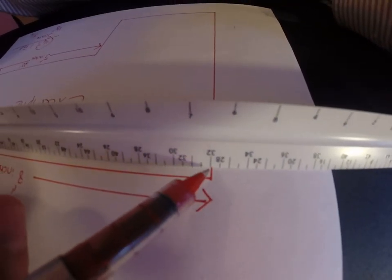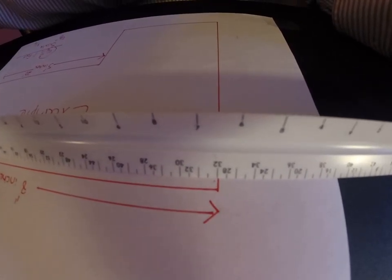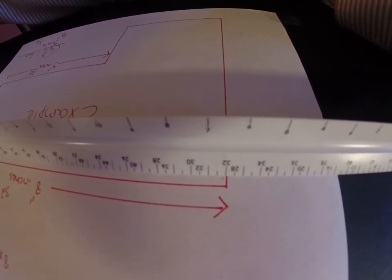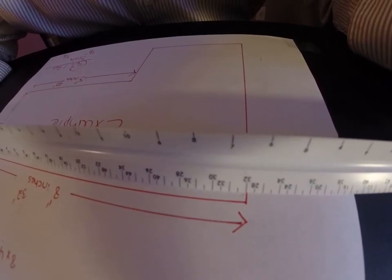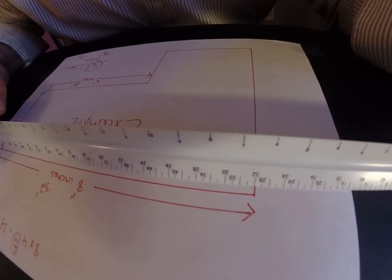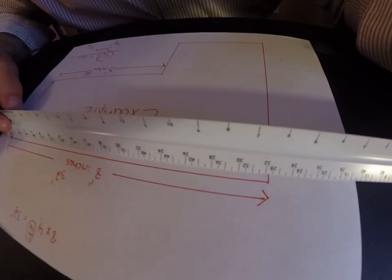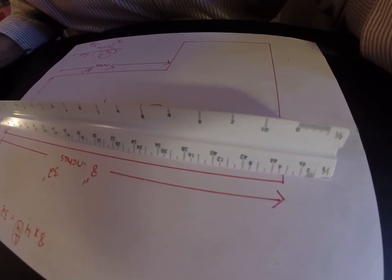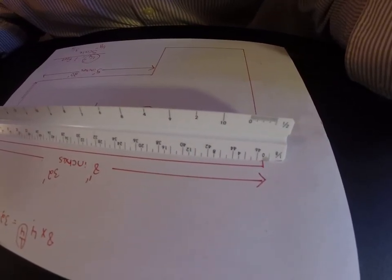...my 32 foot mark should be right at the wall just as it should be. Obviously if I use my eighth inch scale, I should have double that. I should have 64 because the eighth inch scale is a smaller scale.